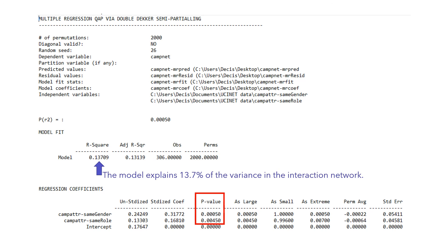Still, there are 86.3% of the variance in the interaction network that cannot be explained by our model. We are obviously missing something important here. What other independent variables could explain how people interact in the workshop? To answer this question, you then go into the literature, develop more hypotheses, and test them.